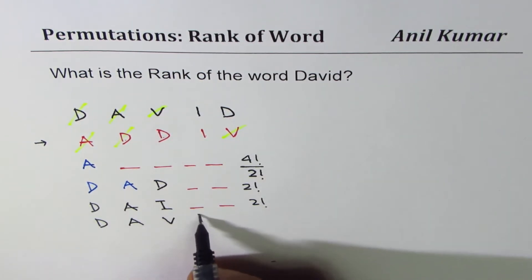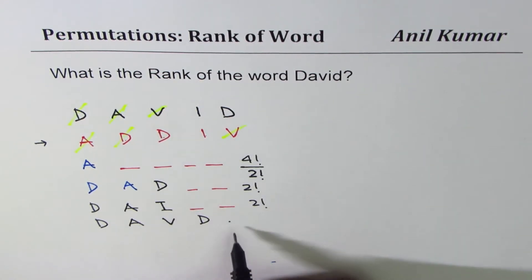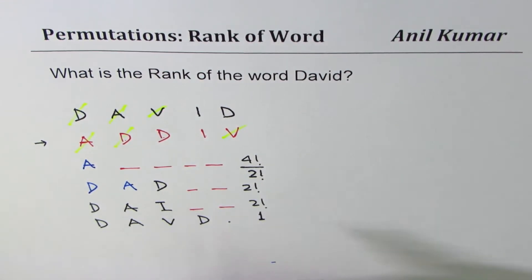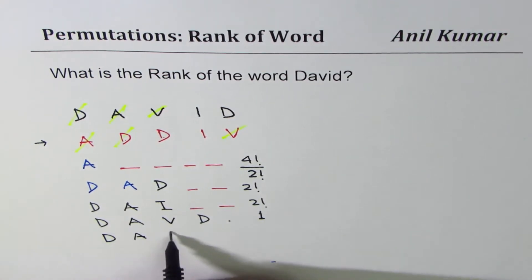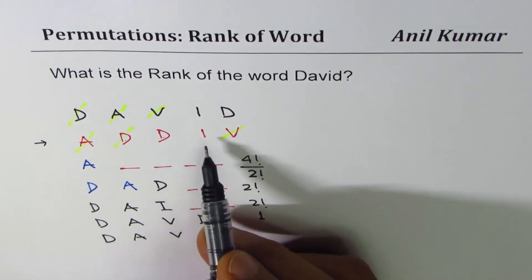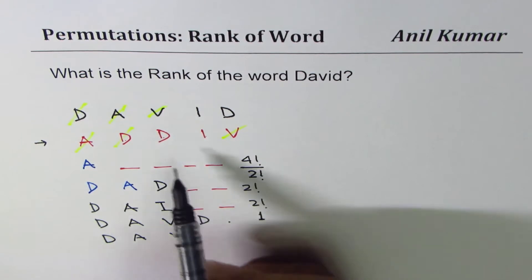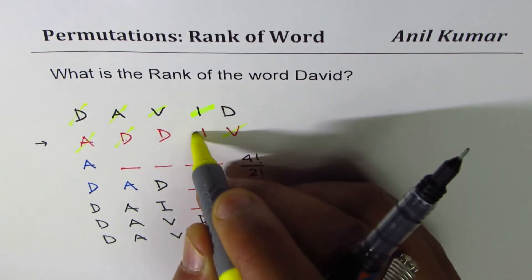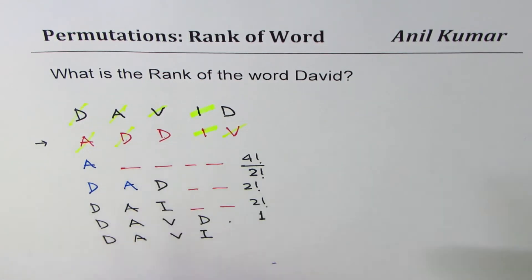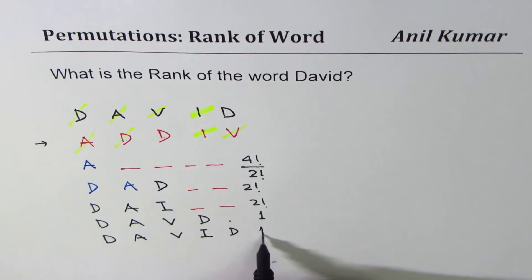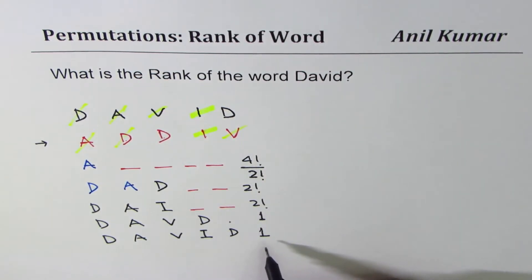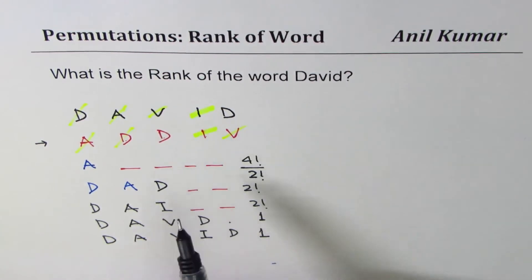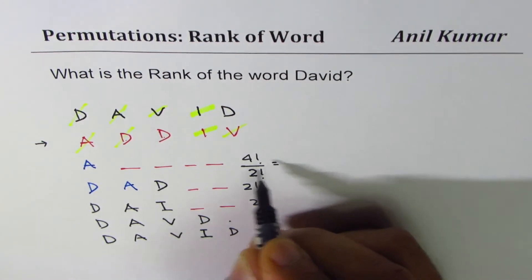We have D-A-V, then the next position: we want I. This position can be filled only by one letter, which is I — so that's one way. The next word is D-A-V-I-D, which is ours. We start with I, got it — then begin from the leftmost side, and the only letter left is D. That is the word. By counting these numbers we know exactly where DAVID appears — that's called the rank.